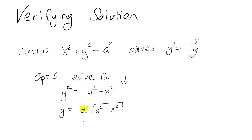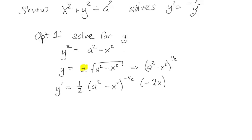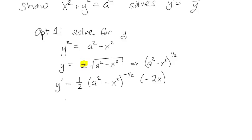So let's start with the positive version. The derivative is going to equal — remember, this is the same as (a² − x²)^(1/2). So we take the derivative: we get 1/2 · (a² − x²)^(−1/2), and then times the derivative of the inside, which is −2x.